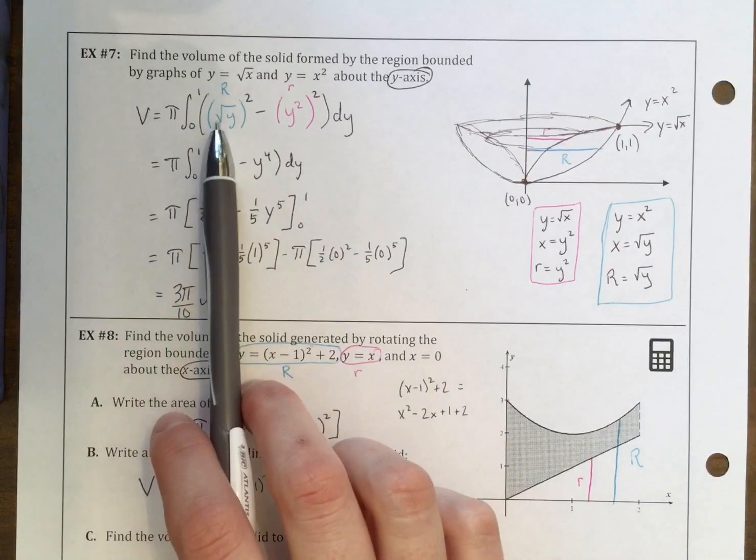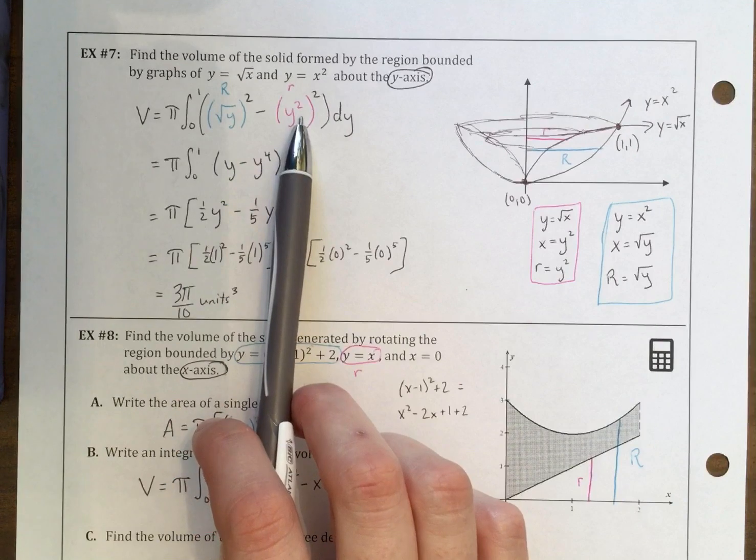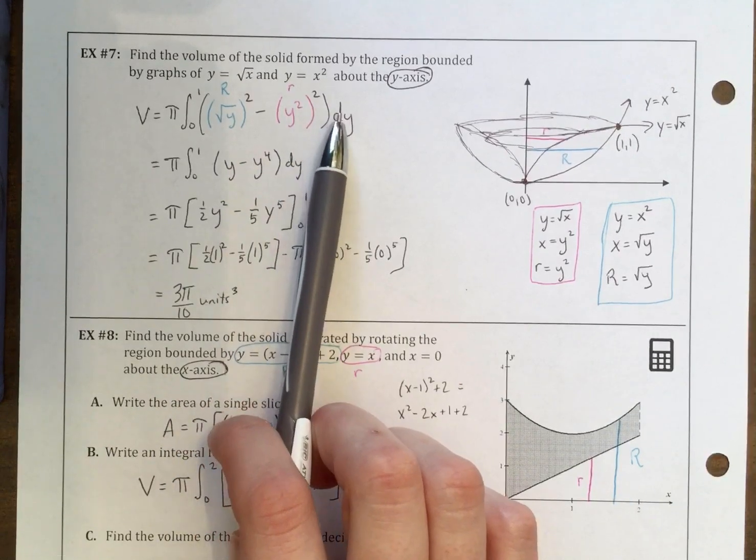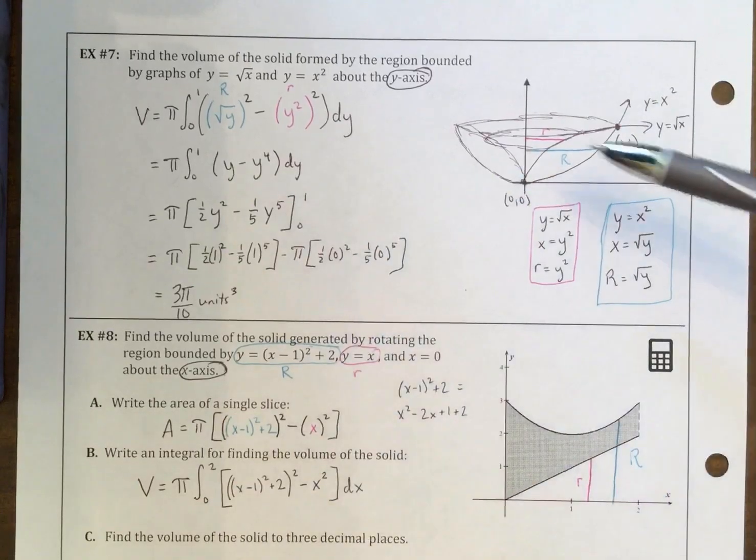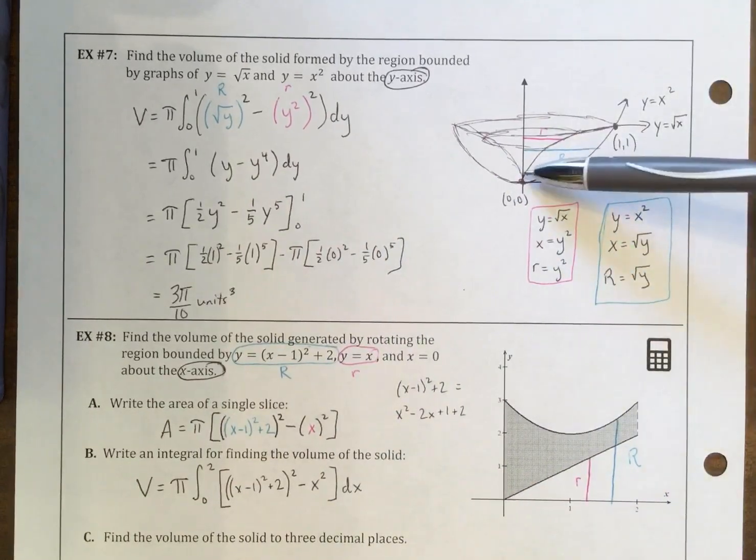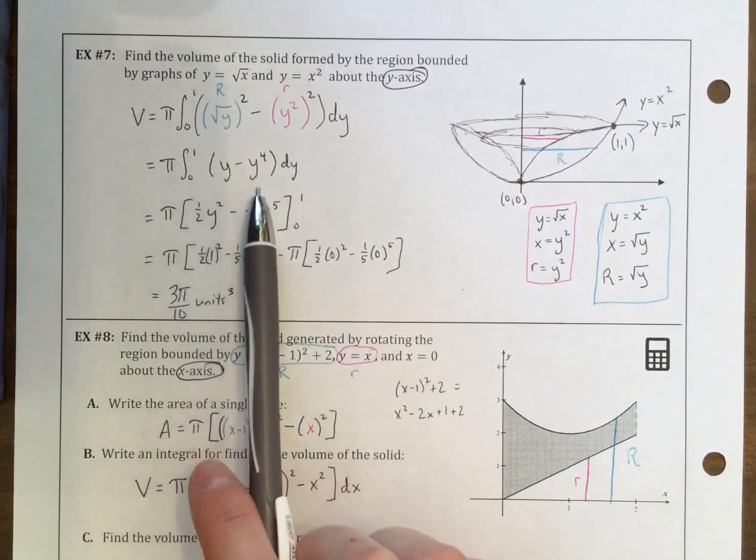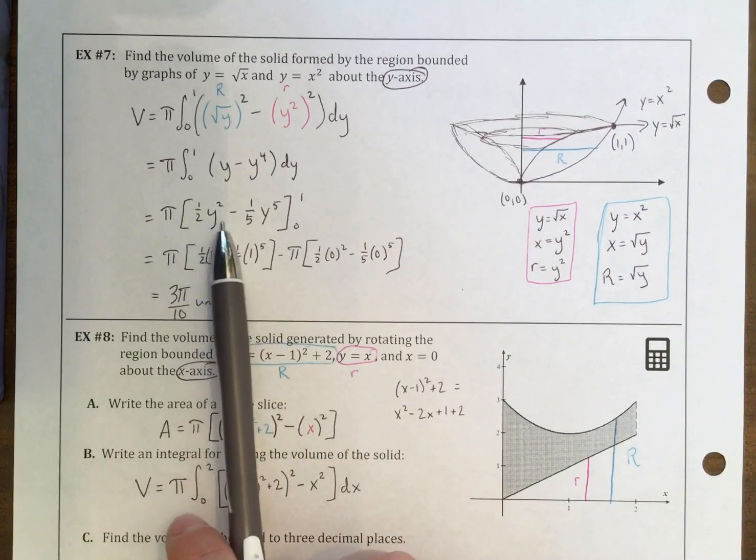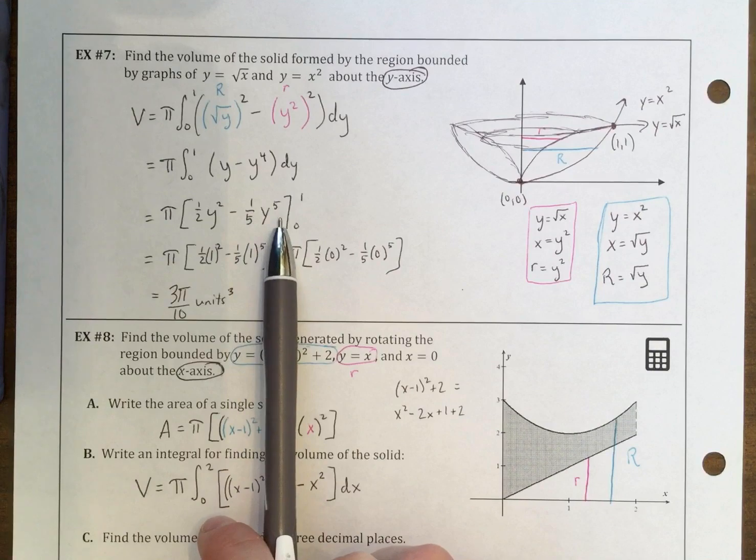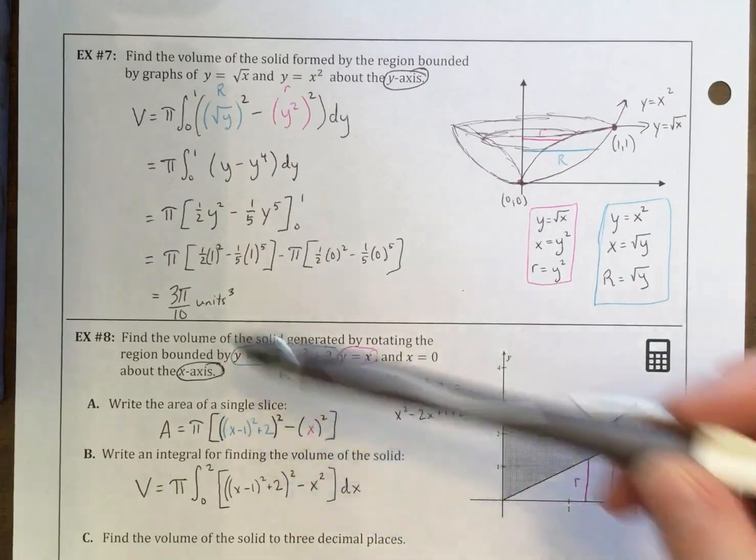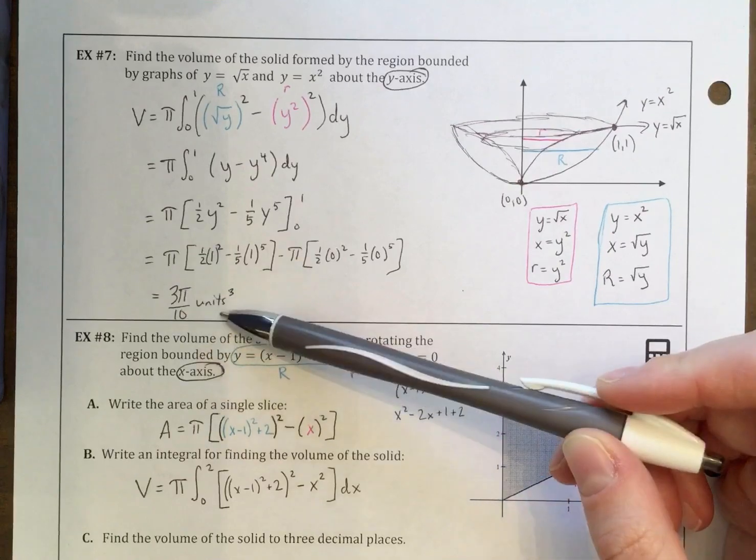Next we want to take big radius squared and minus it from the little radius, minus the little radius squared dy. Our bounds are in terms of y, so we're going from 0 to 1. When you integrate it, you'll get 1 half y squared minus 1 fifth y to the fifth from 0 to 1. And when you calculate that out, you should get 3 pi over 10 units cubed.